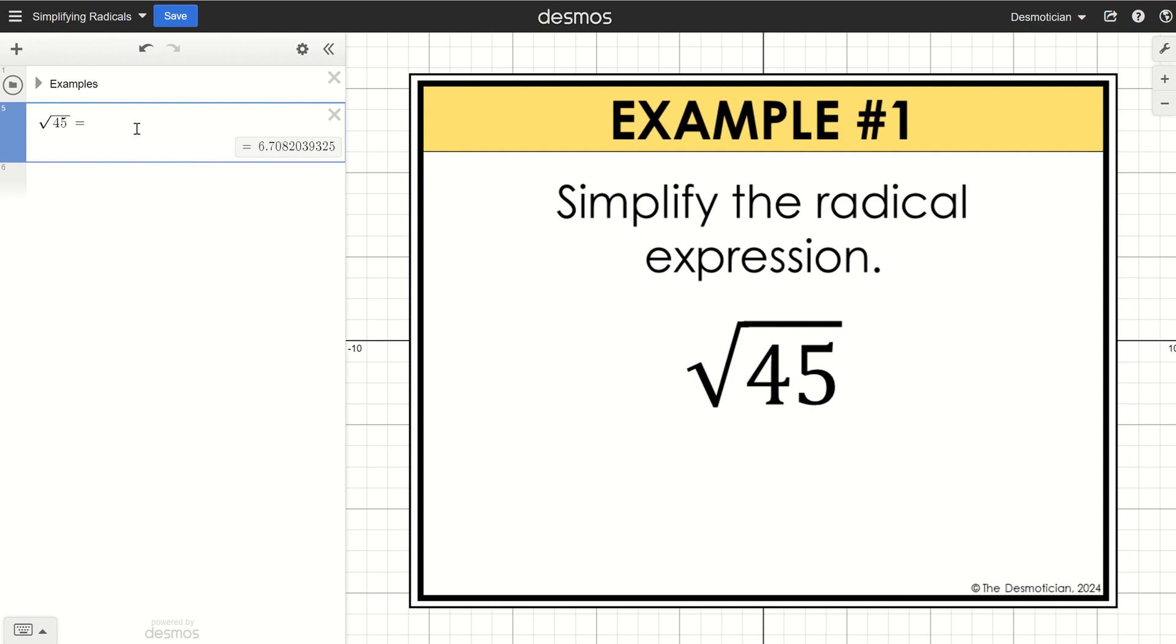So we're going to rewrite this as a perfect square, 9 times 5 which is 45. Now the square root of 9 can be simplified to 3 so this expression can easily become 3 square root of 5.